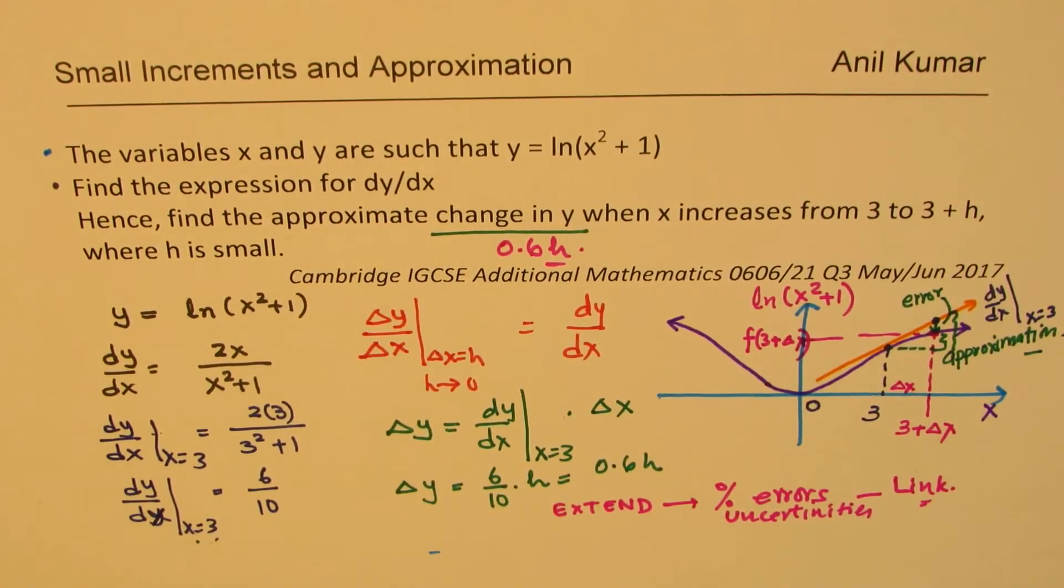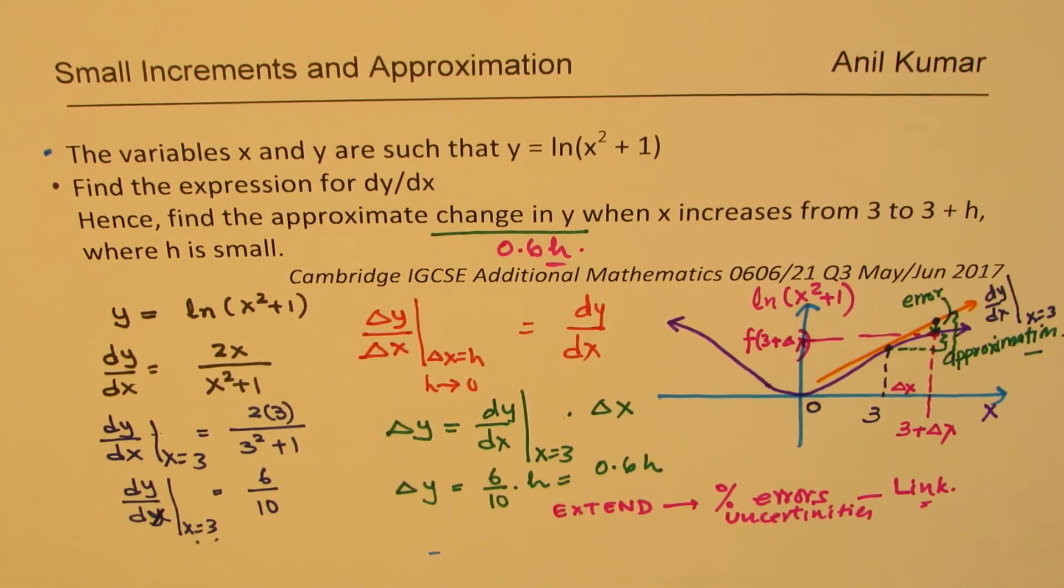The process of finding it - however in this particular case, the approximate change in y is going to be 0.6h, so that becomes our answer. I hope that helps you to understand the concept behind the question and the function as such, which is very important since this particular function could have been there in your test paper for a different reason.